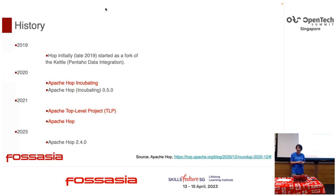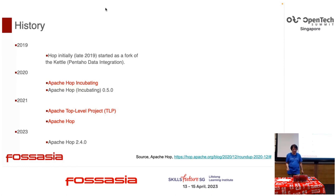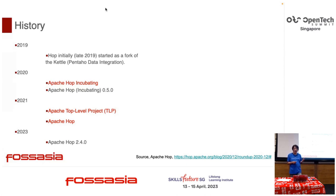Here is the history. In 2019, Hop initially started as a fork of Kettle. Do you know Pentaho? In 2020, we started Apache Hop incubating. And in 2021, we became an Apache top-level project, just Apache Hop. This year, Apache Hop 2.4.4.0 was released.